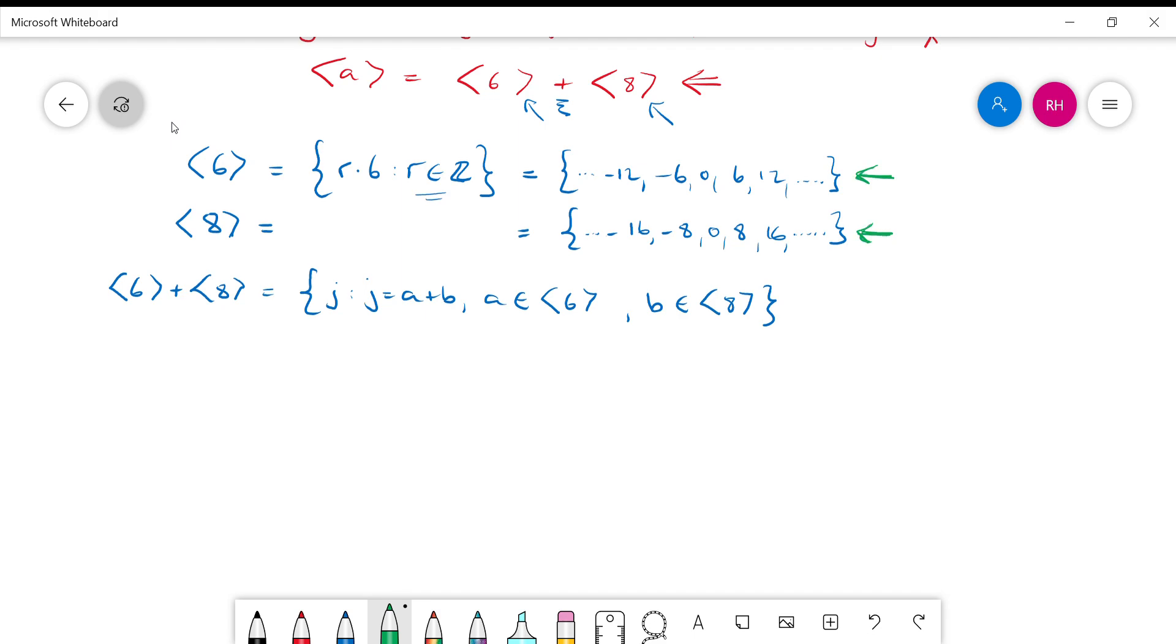So if I'm just playing around with this, I can see, for example, that we could have 12 plus 0. So 12, well, that's in there. What about 8 minus 6? Well, that's 2. So 2's in there.